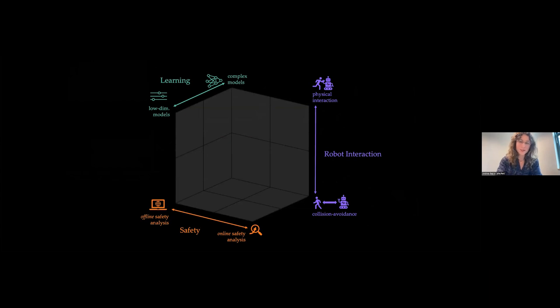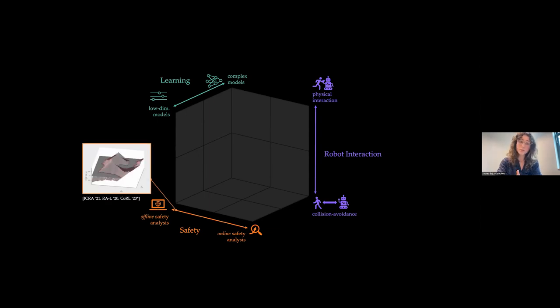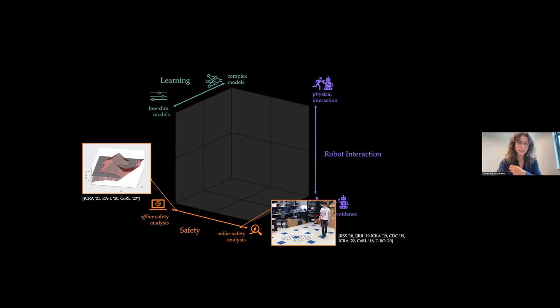Finally, there's this question of how to perform safety assessment, and this can happen at two extremes. Offline, wherein the human model and robot decision-making is stress-tested, to online, where the robot continuously monitors its interaction with the human.